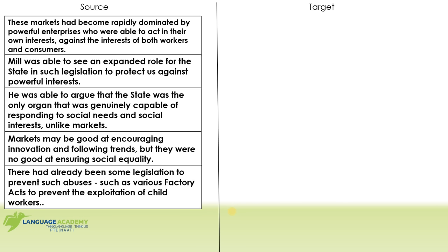Practice Example 2: We have sentences about markets, Mill, and legislation. 'The charts with these markets had become rapidly dominated by powerful enterprises acting against the interest of both workers and consumers' — 'these markets' refers back to something, so it cannot be the first sentence. 'Mill was able to see an expanded role for the state in such legislation' — 'such legislation' refers back to something already mentioned, also cannot be first. 'He was able to argue that the state was only...' — pronoun 'he' with no name in the sentence, cannot be first. 'Markets may be good at encouraging innovation and following trends, but they were no good at ensuring social equality' — this can potentially be the first sentence as it introduces markets generally.